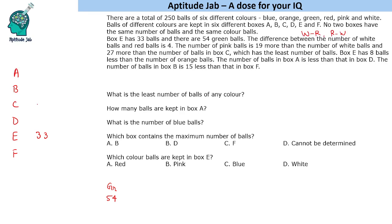Let us assume the number to be x for white balls. So white balls will be 19 less, that is x plus 19 for pink. It is very important to read this statement carefully and make the equation correctly. It says 27 more than the number of balls in box C, so it is x plus 27, and 19 more than white balls. We will subtract 19 and we will get the number of white balls as x plus 8.